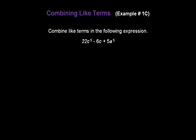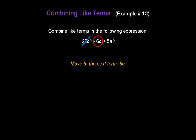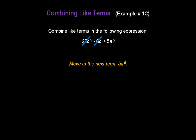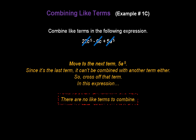Now let's combine like terms in this expression. The first term is 22c to the fifth power — there are no other c-to-the-fifth terms, so cross it off. The next term is negative 6c — there are no other c terms either. The last term is 5a to the fifth — it can't be combined with any other term. So in this expression, there are no like terms to combine.